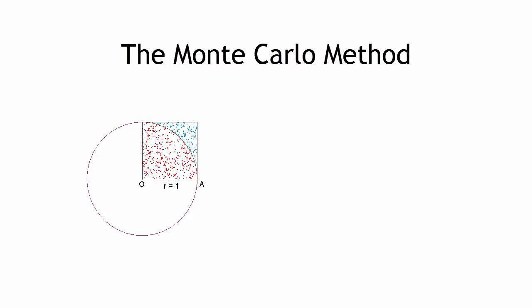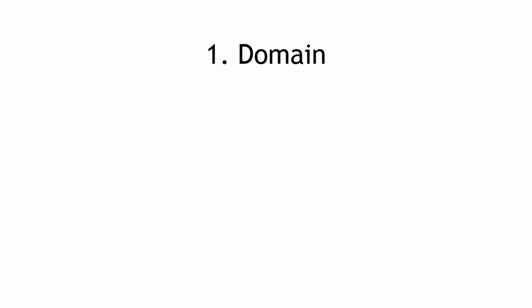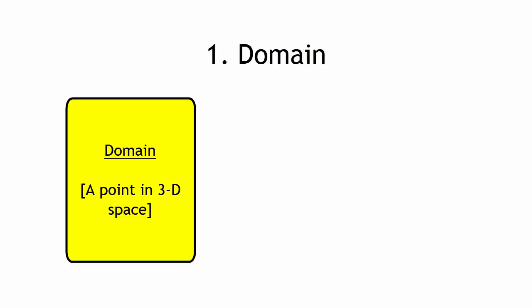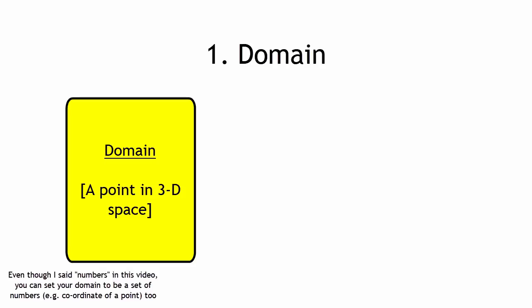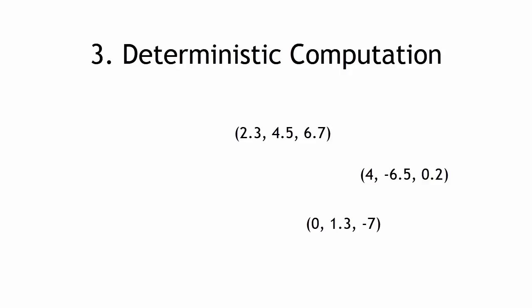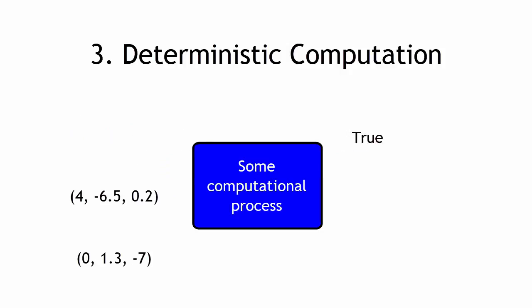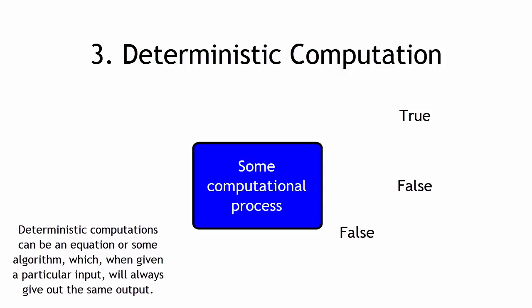Now, there are a couple of different variations of the Monte Carlo methods, depending on the type of mathematical problem that you have at hand. However, all these different variations tend to follow a very similar general set of steps. Firstly, you have to come up with a domain for your random set of numbers — between which range can your randomly generated numbers fall under. Secondly, you have to generate random inputs. Thirdly, you take these numbers and do a deterministic computation with them — for example, plug them into a particular equation to get out some sort of an output. And lastly, you take the numbers that you got and then analyze it and get a numerical answer as appropriate.